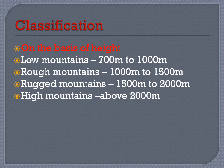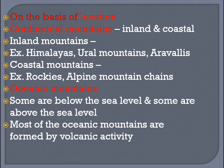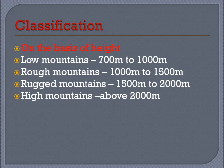Mountains are classified on the basis of height, origin, location, and geological time scale. On the basis of height, they are classified into four groups: low mountains, rough mountains, rugged mountains, and high mountains. Low mountains have a height of 700 to 1000 meters, and rough mountains range from 1000 to 1500 meters.